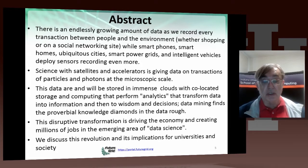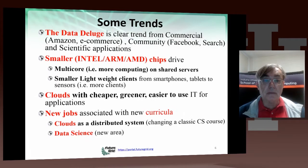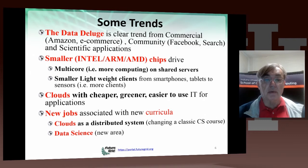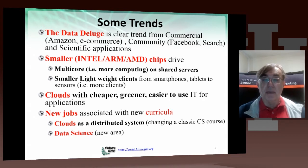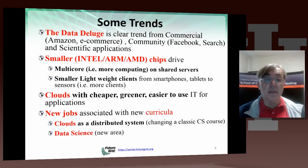We discussed this revolution and its implications for universities and society. Some important trends include the data deluge, which is a clear trend. Amazon is an e-commerce example; the community includes social networking like Facebook and search engines like Bing and Google. We will also discuss science and medical applications.